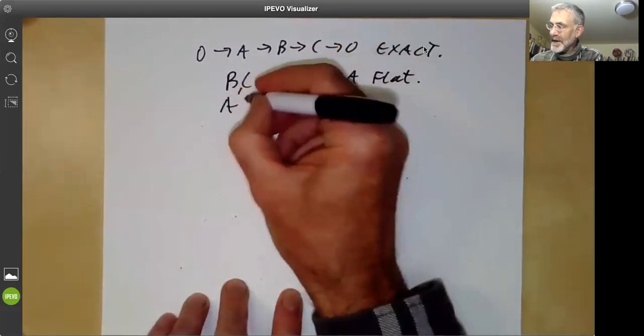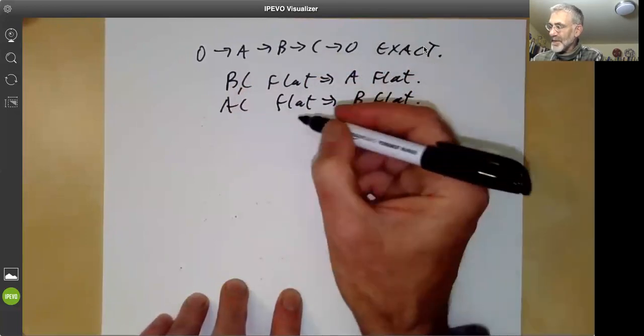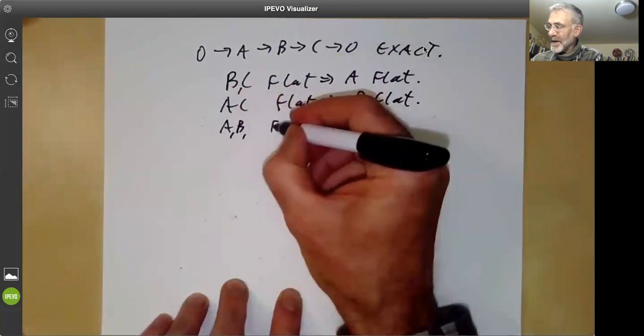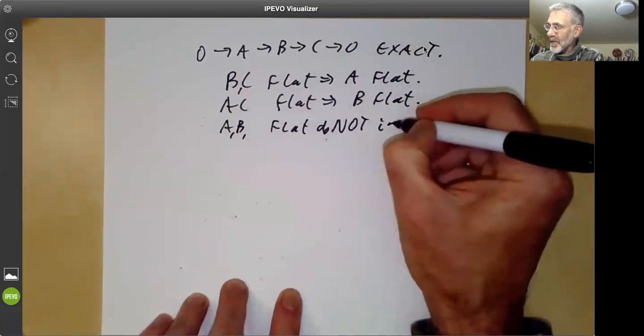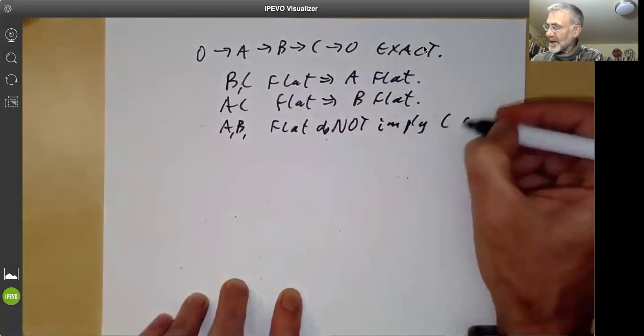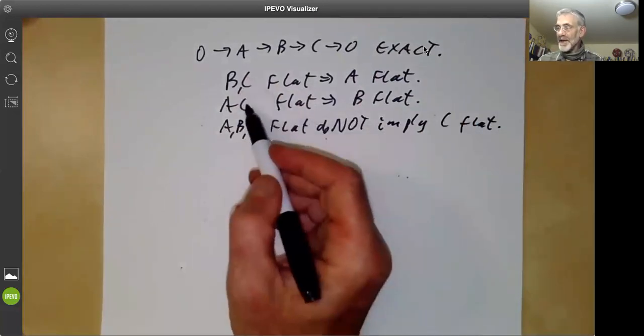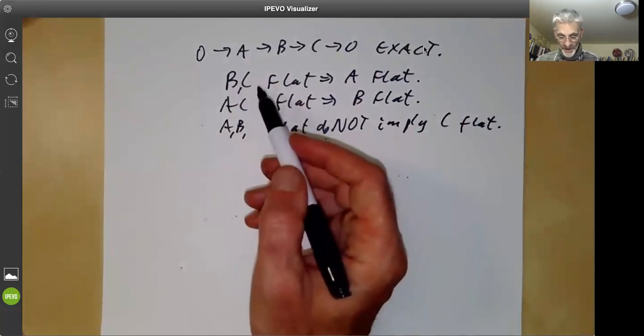A and C flat implies B is flat. And A and B being flat do not imply C is flat. So you've got to be a little bit careful. And again, these two facts here are very easy to prove using homological algebra, so I'll postpone the proof of them.